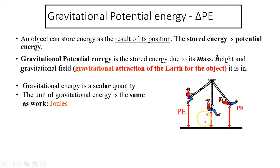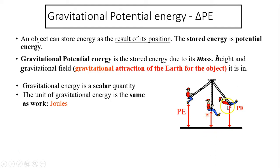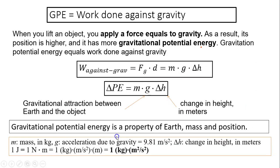Consider a person on a swing. At the highest point, you have the greatest gravitational potential energy. At the lowest point, you have low gravitational potential energy. At an intermediate position, you have medium gravitational potential energy.